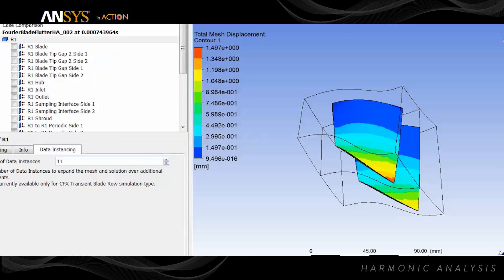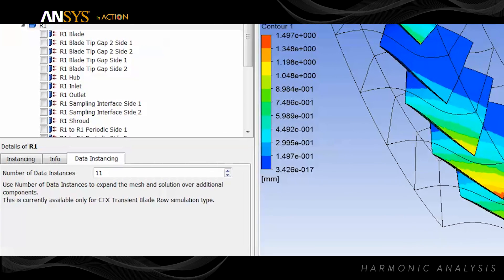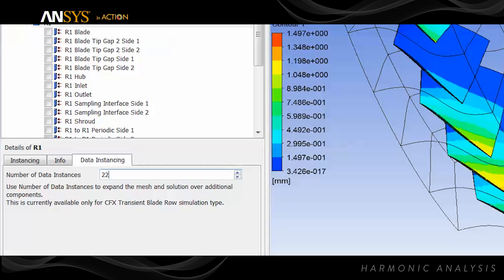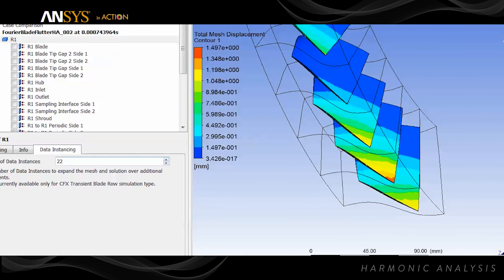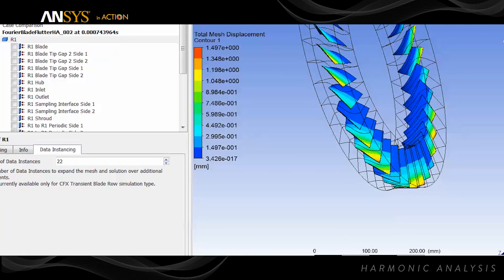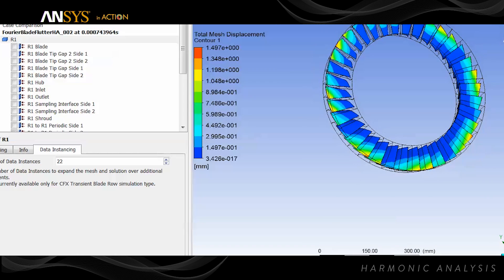Now we expand from one blade to the entire wheel in CFD post. The CFD uses Fourier transformation pitch change analysis of reduced geometry to model the phase shift at the periodic boundary.